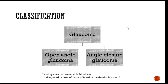Glaucoma is one of the leading causes of irreversible blindness. Blindness due to cataract can be resolved with surgery, whereas that due to glaucoma cannot. So once the vision is lost, it is lost forever. Whatever treatment we give is only to prevent further damage and to preserve the existing vision.